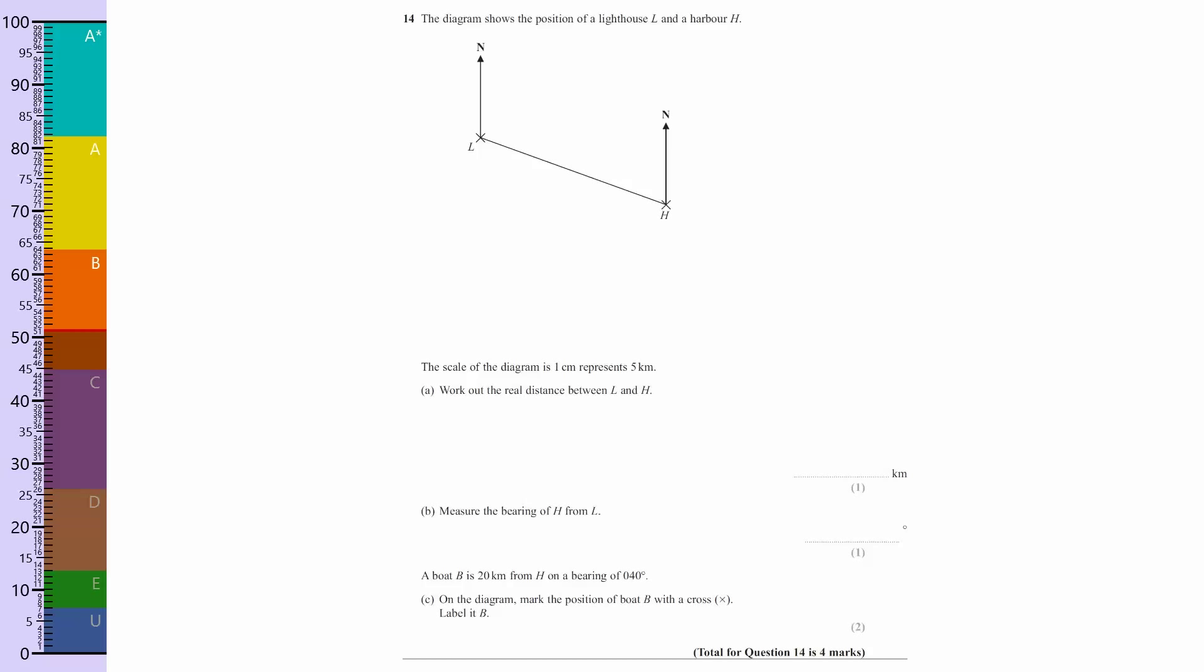Okay, so bearings. The scale of the diagram is one centimeter represents five kilometers. Work out the real distance between L and H. Now it's very difficult to do this on the screen, but let's try and work it out.